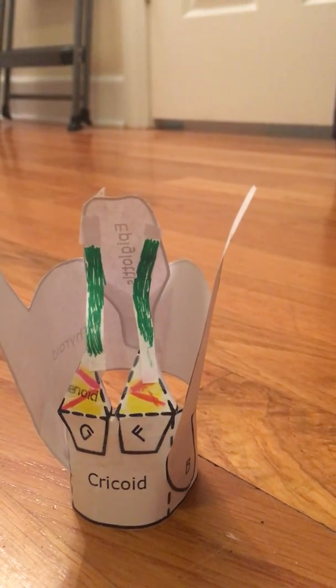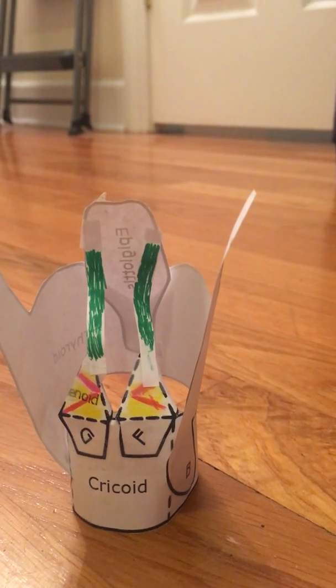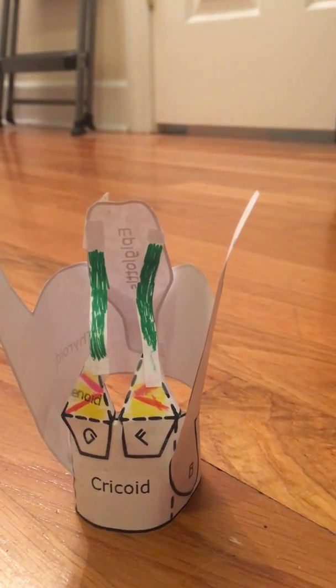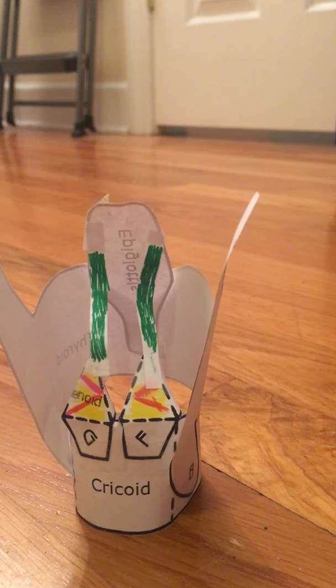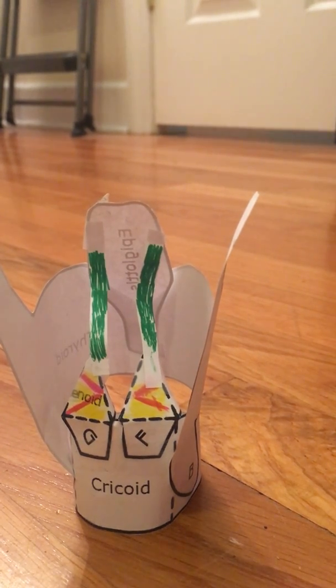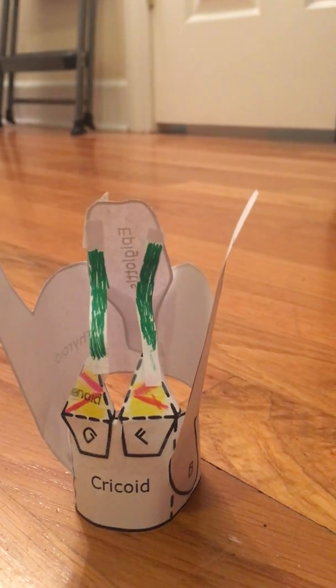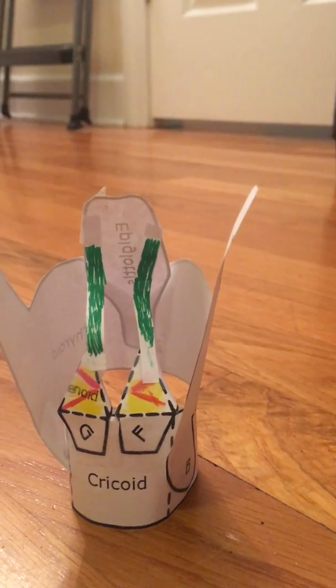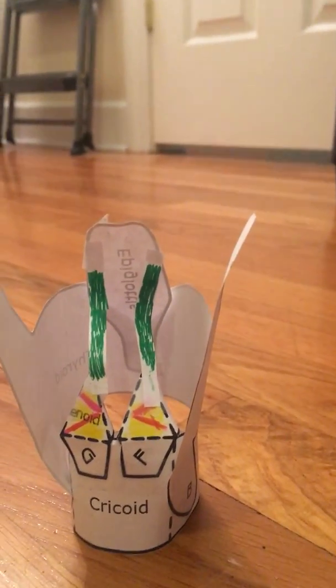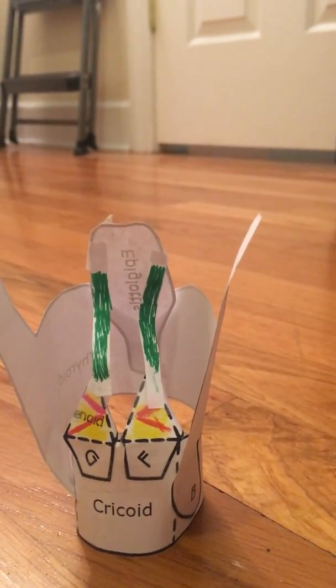When they contract, they also pull the arytenoids closer together. They are intrinsic adductors and pull the vocal folds close together as well. The last muscles we have are the paired aryepiglottic muscles.